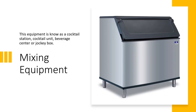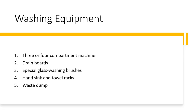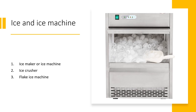This is an example of mixing equipment, known as a cocktail station, cocktail unit, beverage center, or jackie. For washing equipment, we have at least five: three or four compartment machines, drain boards, special glass washing brushes, hand sink and towel racks, and the waste dump. A bar can also be equipped with ice machines such as ice maker, ice crusher, and flaked ice machine.